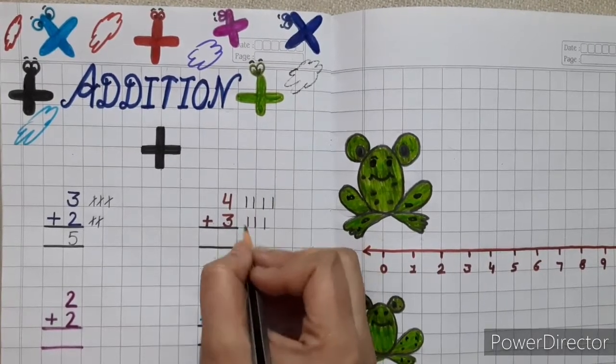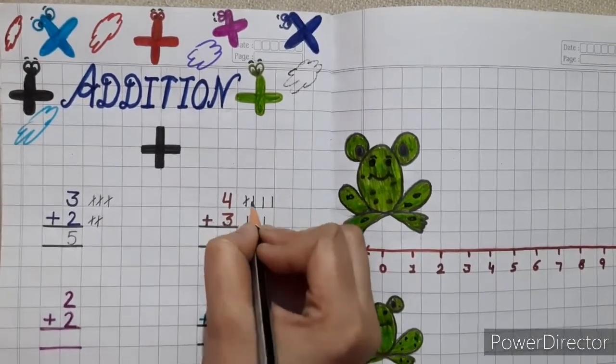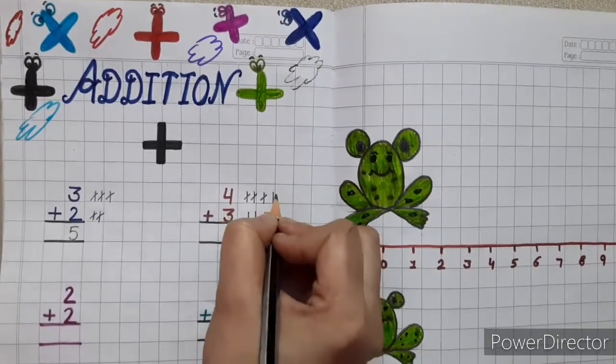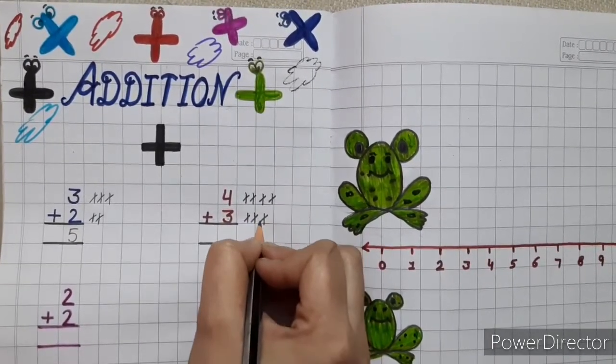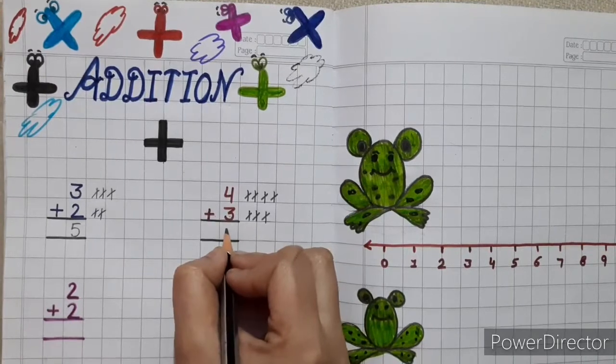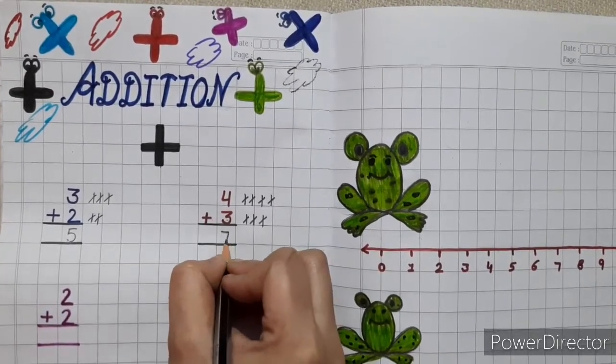Now count all the lines. 1, 2, 3, 4, 5, 6, 7. Answer is 7. So write 7 here.